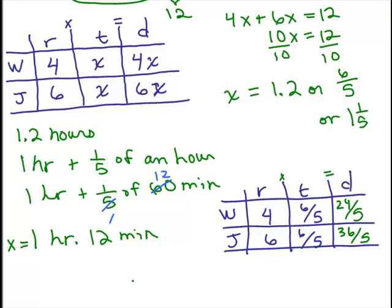So let's put these distances on the chart and see if it makes sense. So let's see. We had Wanda and Jim. And so what we're saying is Wanda's distance is 24 fifths.